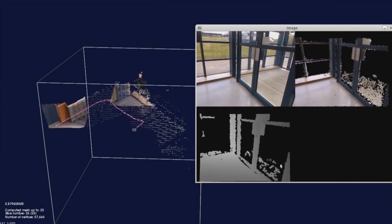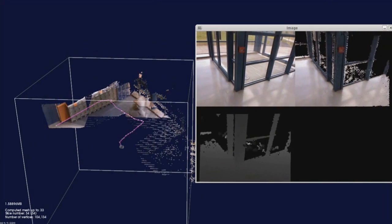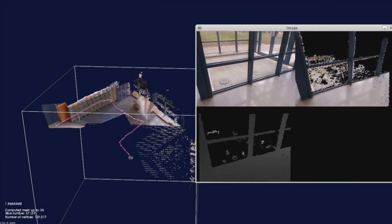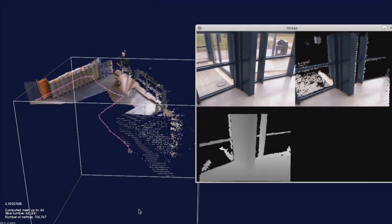Each cloud slice is read off the GPU into system memory, where a separate thread of execution incrementally constructs a triangular mesh representation of the environment. This occurs concurrently and does not affect the Kinect Fusion processing.